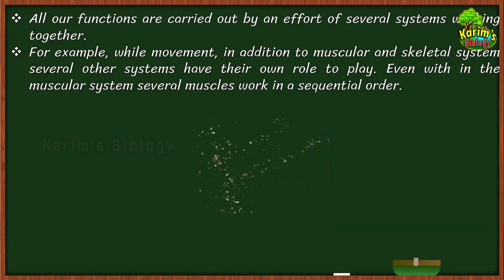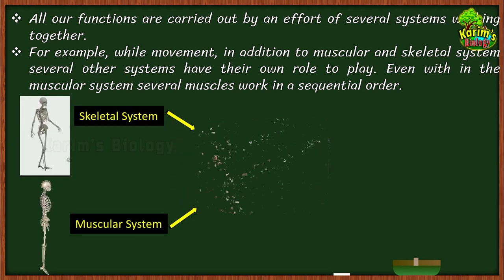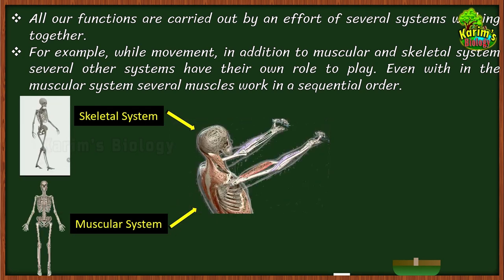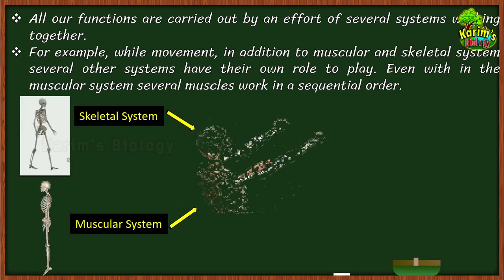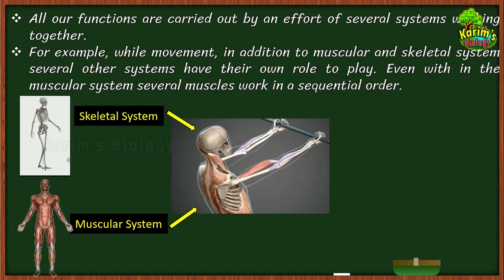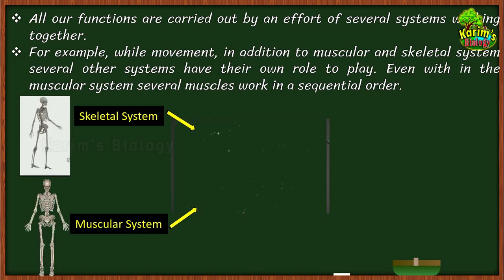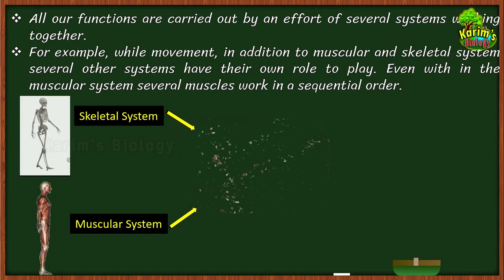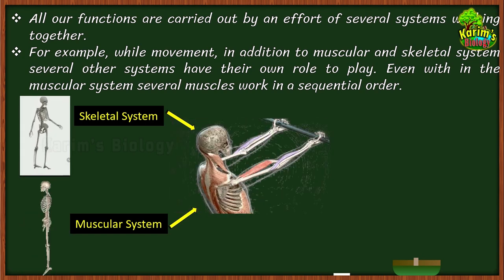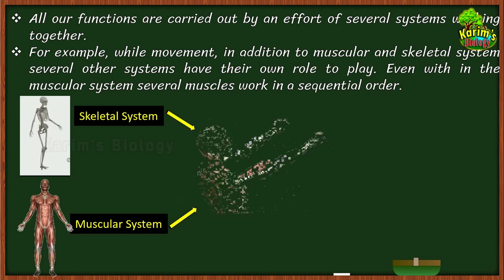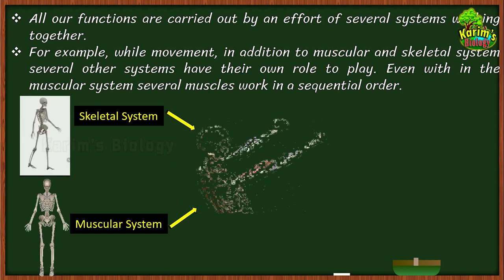The skeletal system is made up of bones, which give support to your body so that you can stand erect. The muscular system is made up of muscles that are attached to the bones and are responsible for bringing about the movement of the skeleton, because the skeletal system alone cannot make movement. It is with the help of muscles attached to the bones that the body can move. In addition to these two systems, other systems also help this process.